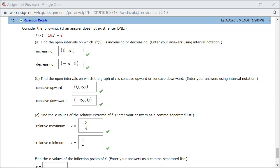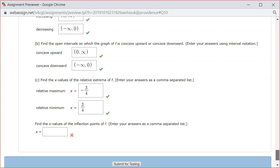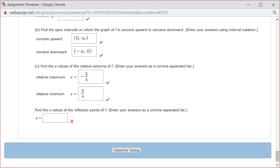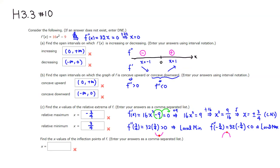It looks like we got part C correctly. Now for the second part of part C: find the x values of the inflection points. Looking back at the sign chart, the second derivative is negative before 0 — meaning the original function is concave downward — and positive after 0 — meaning concave upward. That concavity change happens at 0, so there is an inflection point at x equals 0.